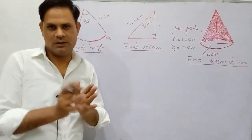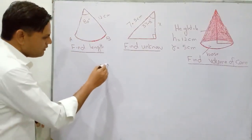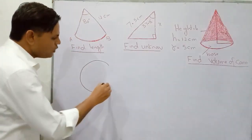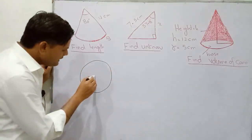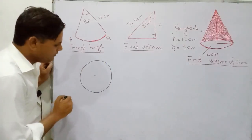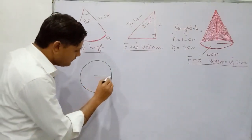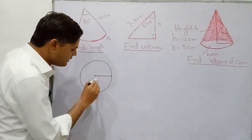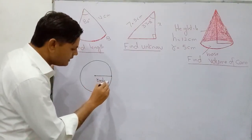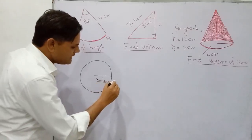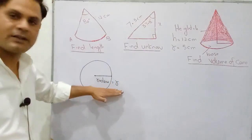I will tell you some previous knowledge about circle. Here is a circle. You know about the circle. This point is called center — the center of the circle. If I take a line from this center to the circle, then this line is called radius. This is called the radius of the circle, and sometimes you represent it by R.